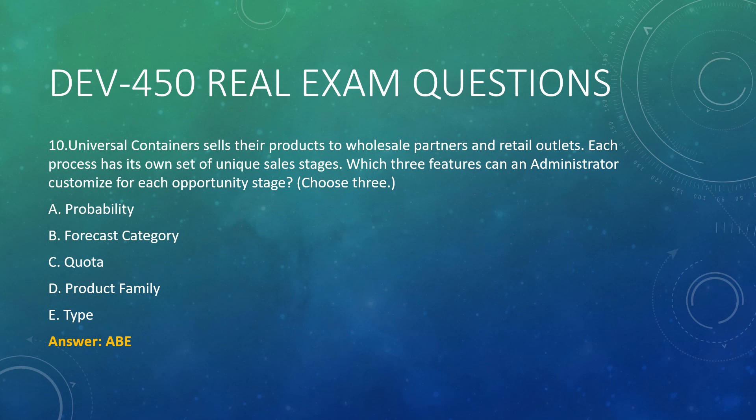Question 10. Universal Containers sells their products to wholesale partners and retail outlets, each process has its own set of unique sales stages. Which three features can an administrator customize for each opportunity stage? Choose three. A. Probability. B. Forecast category. C. Quota. D. Product family. E. Type. Answer: A, B, D.